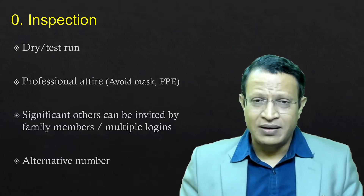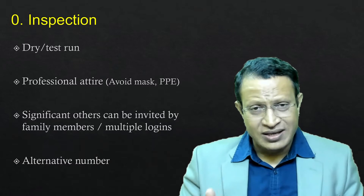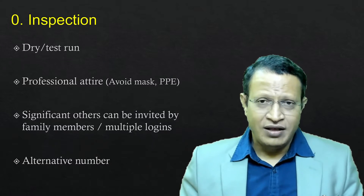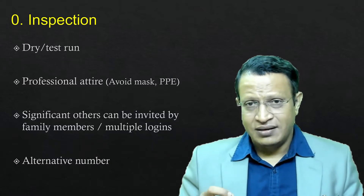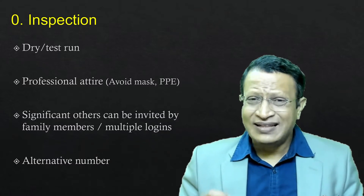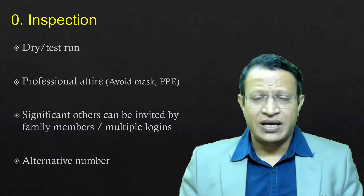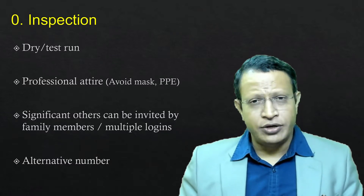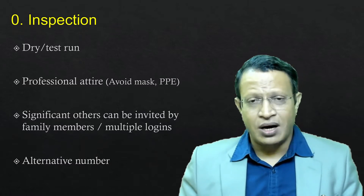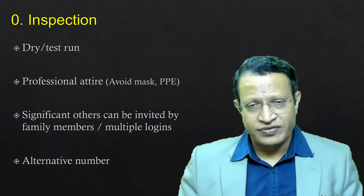From the family side, multiple people can log in. Make sure the significant others on the family side are identified and consent has been taken from the primary caregivers — that is, the primary family members. The healthcare providers on your side should be part of your team and know about the patient. Before you start the meet, have an alternative number so that if any communication breakdown occurs, you can use it to reschedule or reinitiate the conversation virtually.